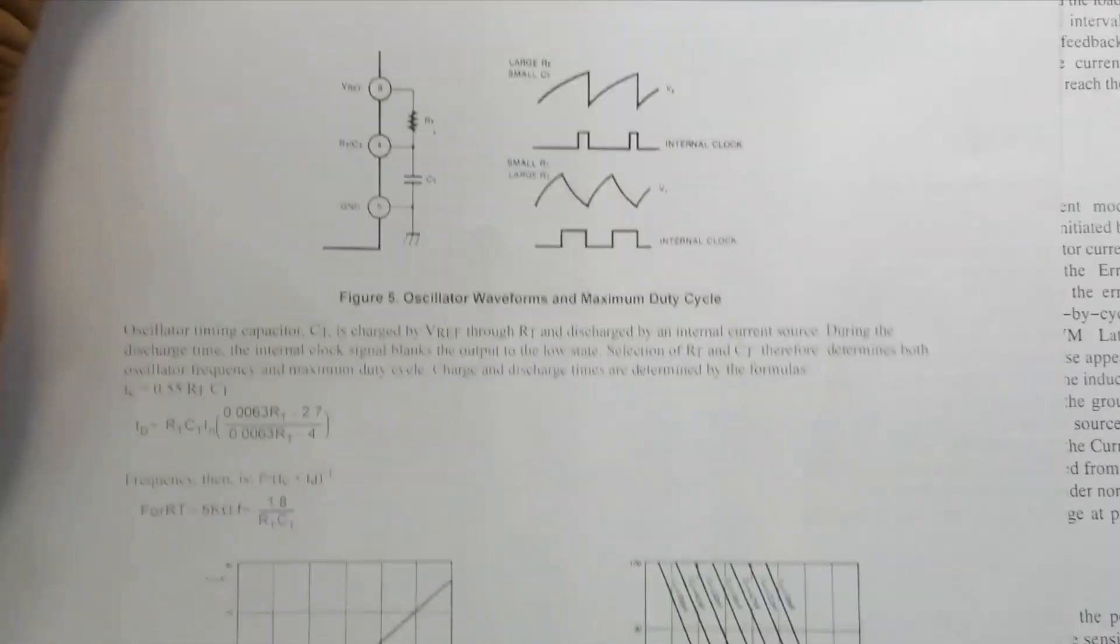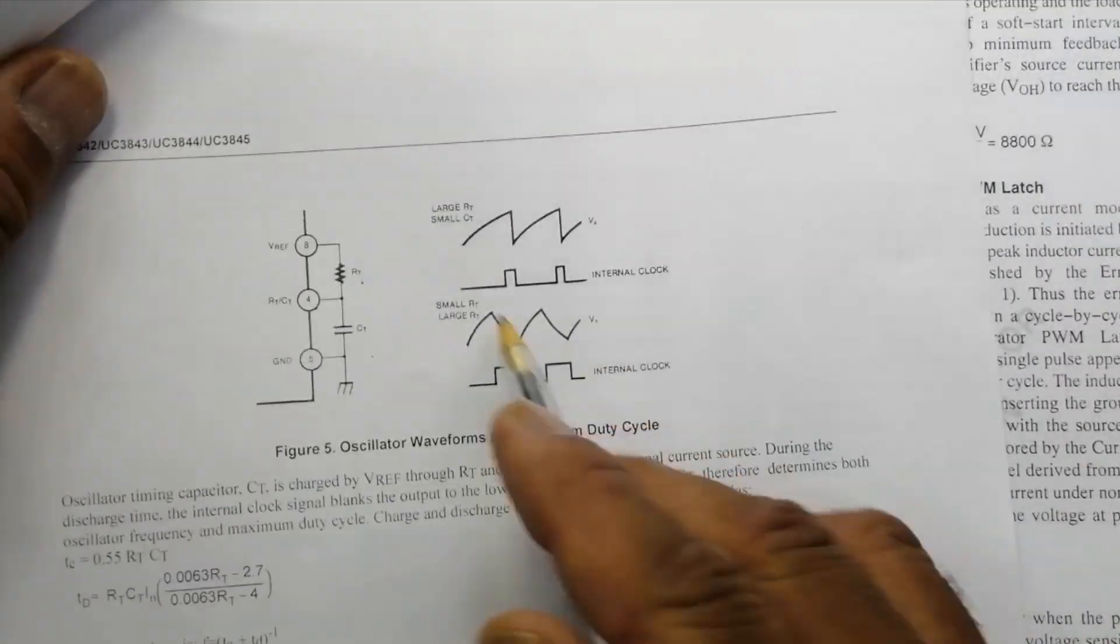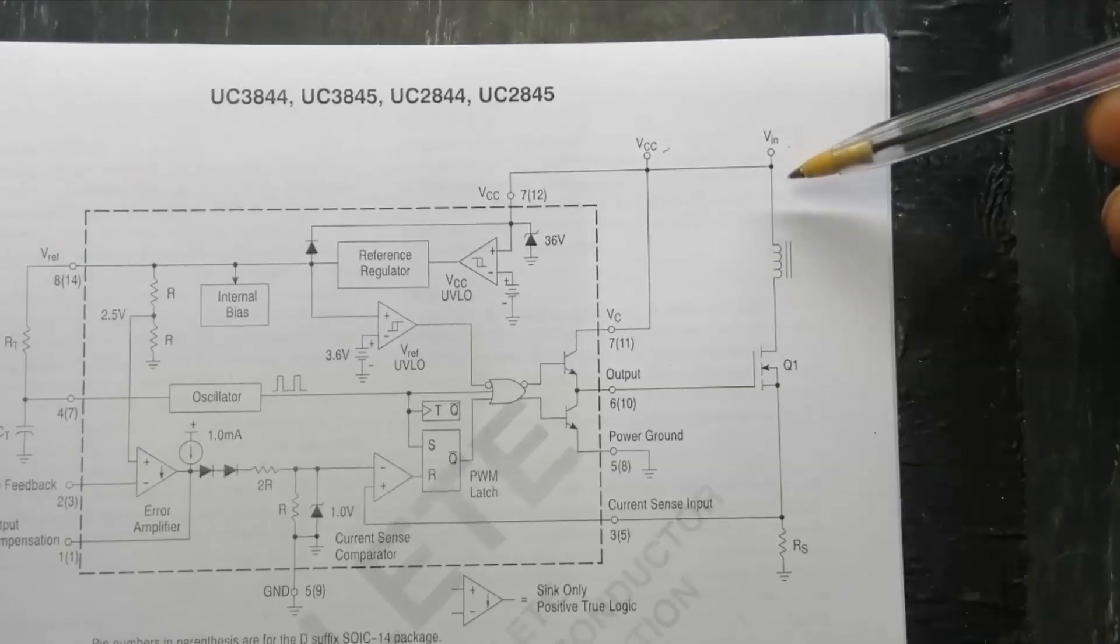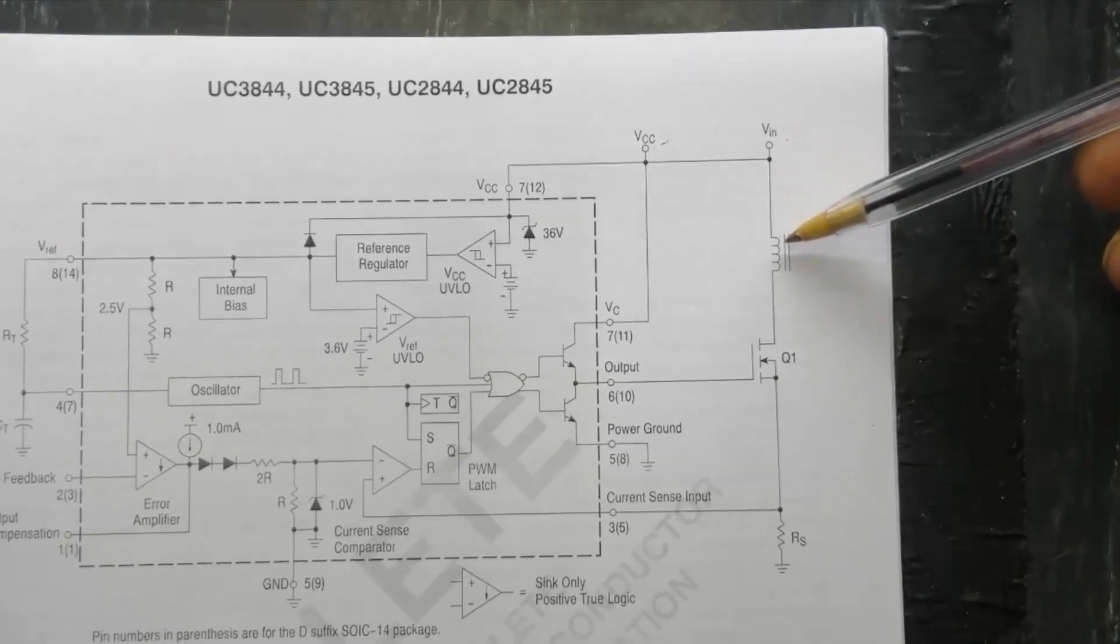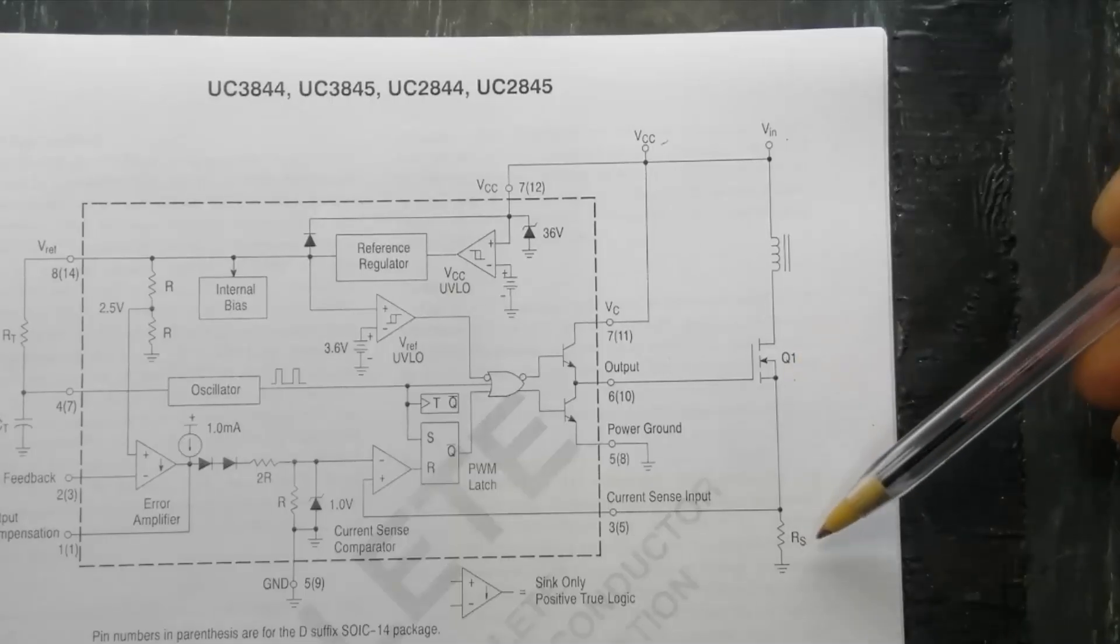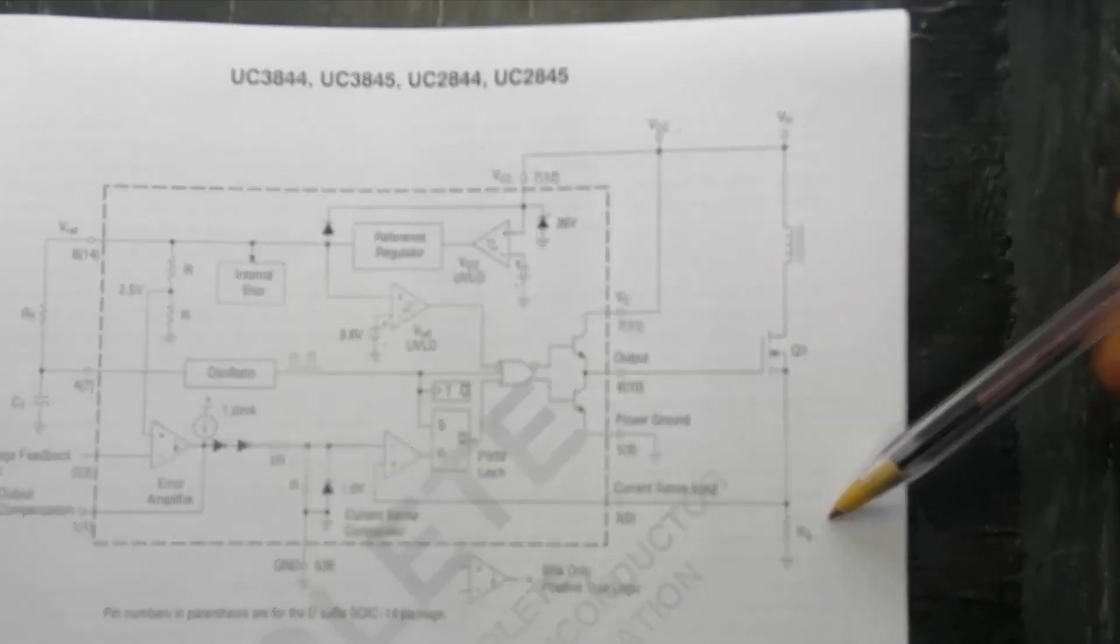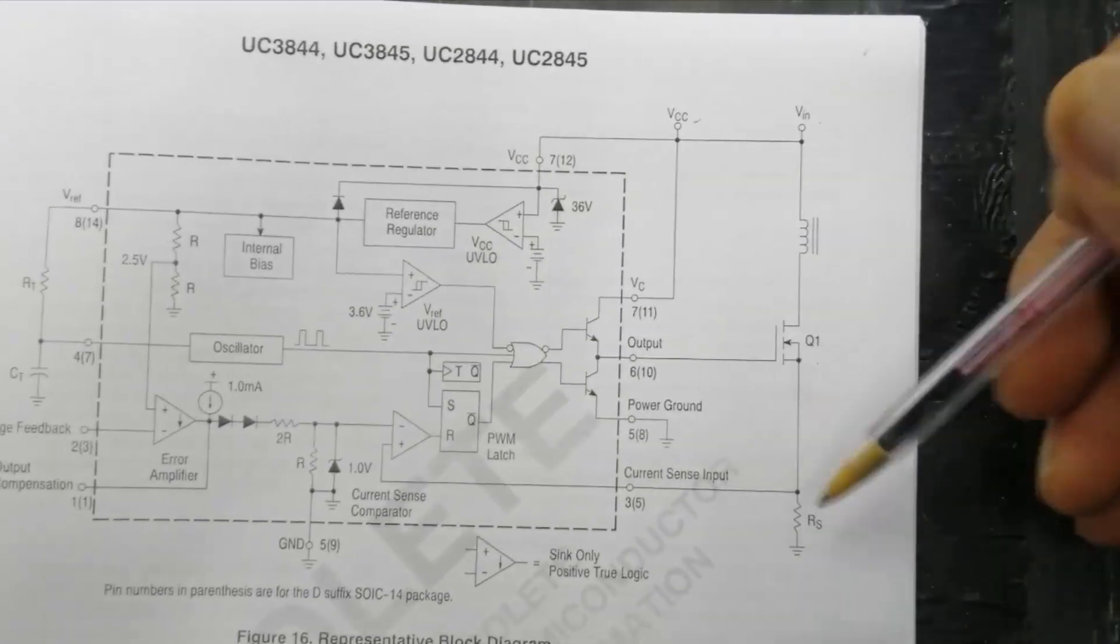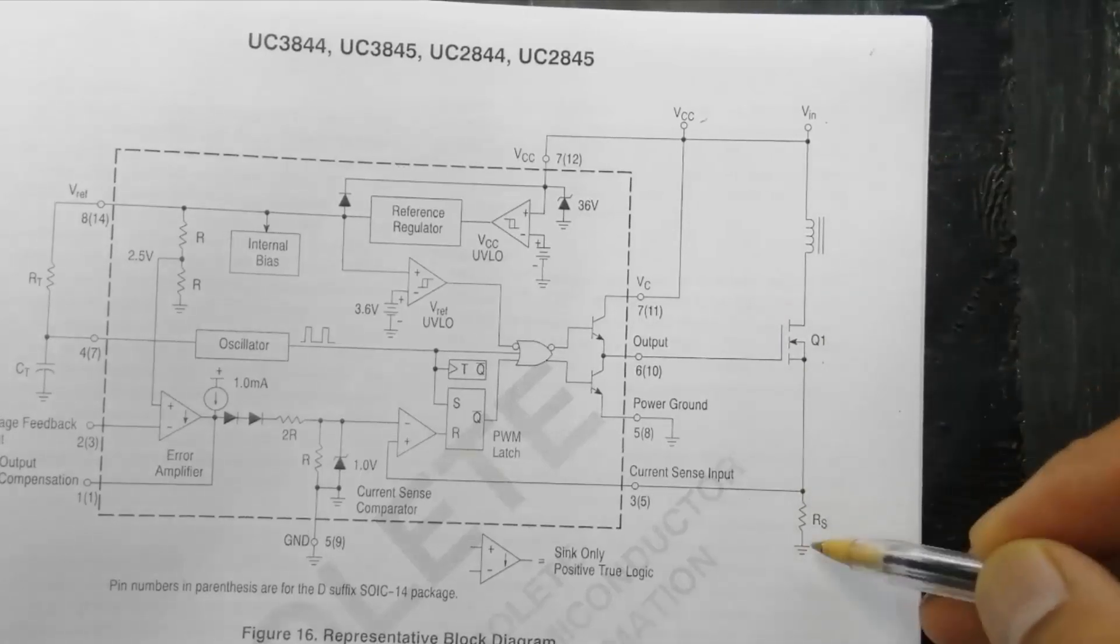So we can find the output frequency and duty cycle. And here is VCC and VIN, which is 300 plus volt connected to coil, Q1, resistor, and it is RS. This is sensor resistor, current sensor resistor. And this voltage dropped on the RS.